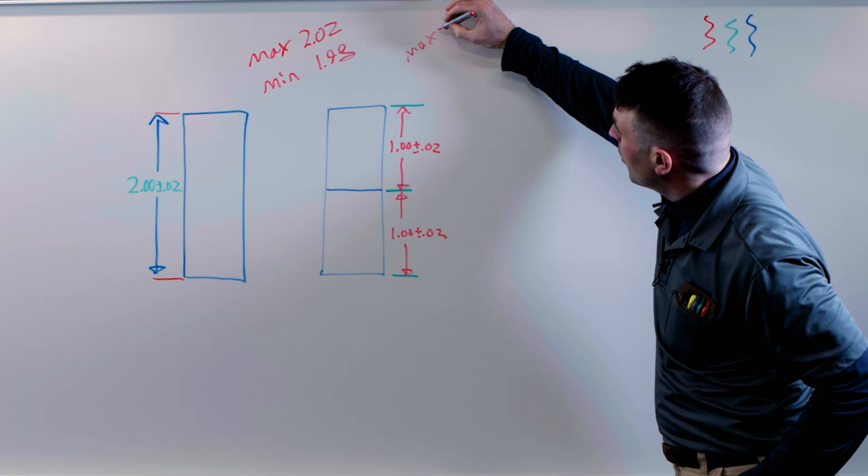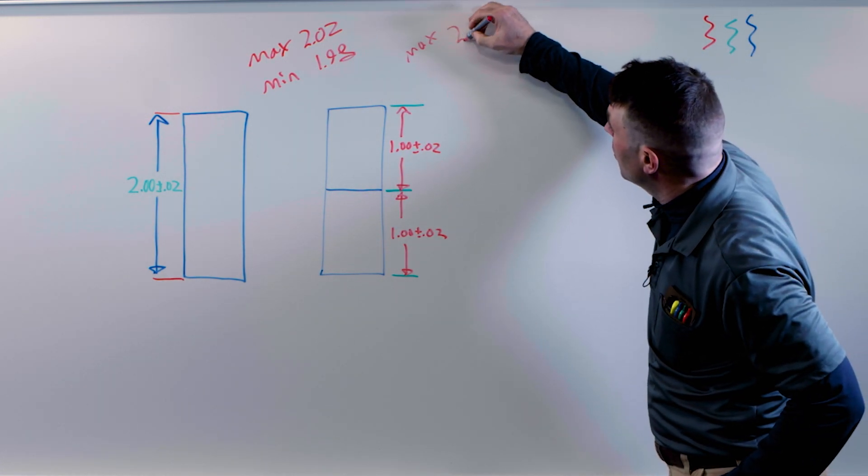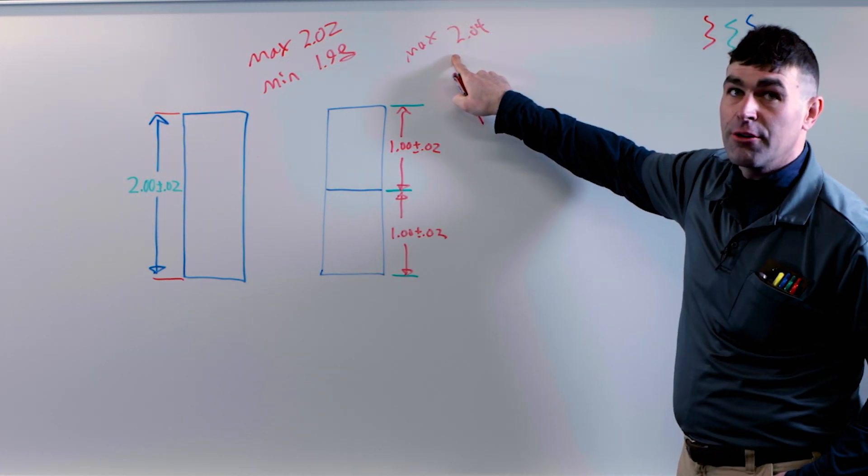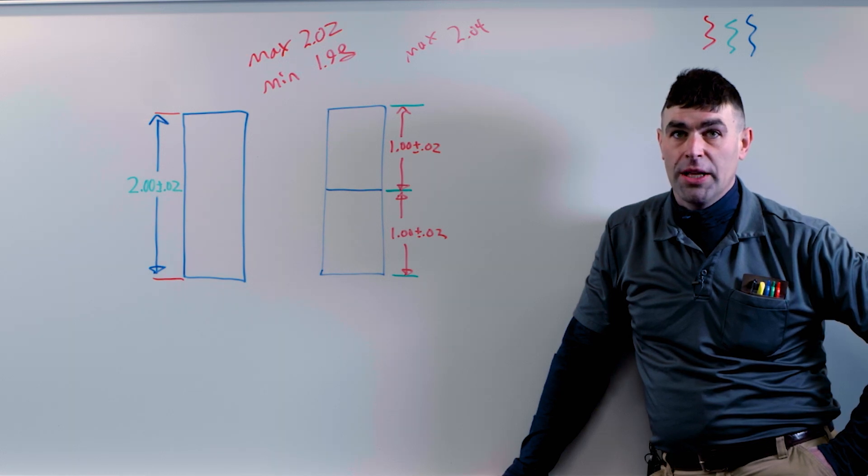So in this example, our maximum is going to be 1.02 plus 1.02 for 2.04. It'd be the same minus 40 thousandths for the minimum.